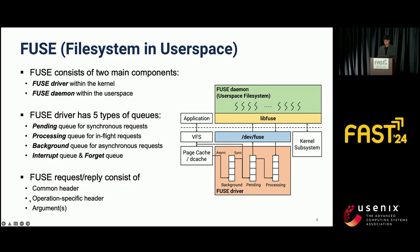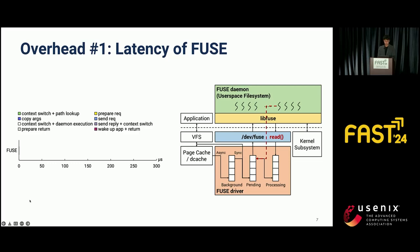The FUSE driver and FUSE daemon exchange requests and replies for file system operations. Requests and replies consist of a common header and an operation-specific header, and may also contain additional arguments depending on each operation. FUSE is often used to build various user space file systems, but it is also infamous for its significant performance overhead. To analyze the latency overhead of FUSE, we performed a latency breakdown, creating a very simple user space file system called NURFS, which only supports the lookup operation on the root directory, and measured latency at each step along the FUSE software stack.